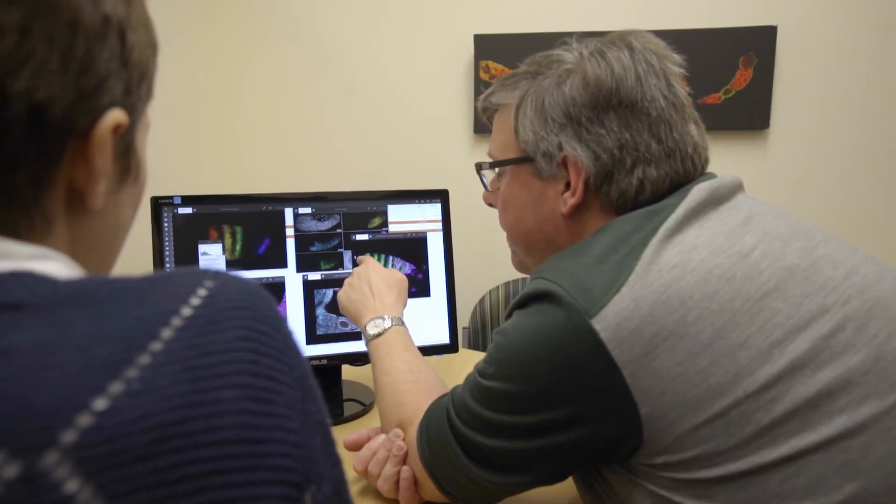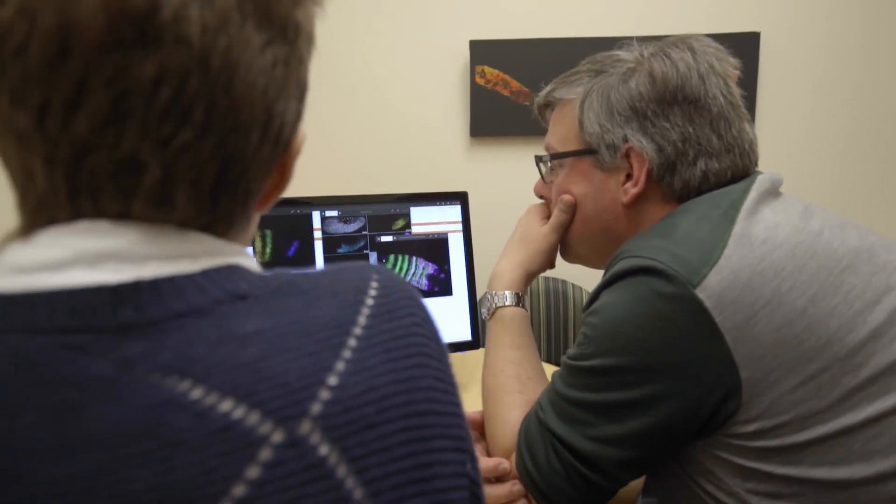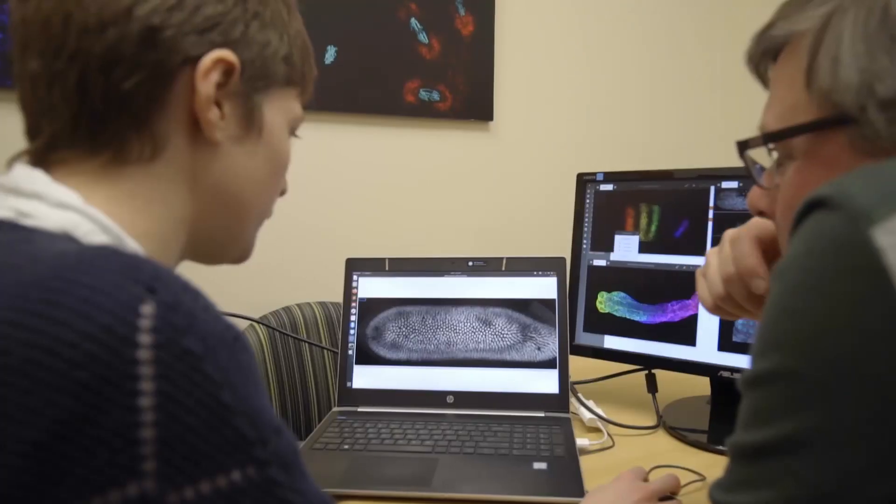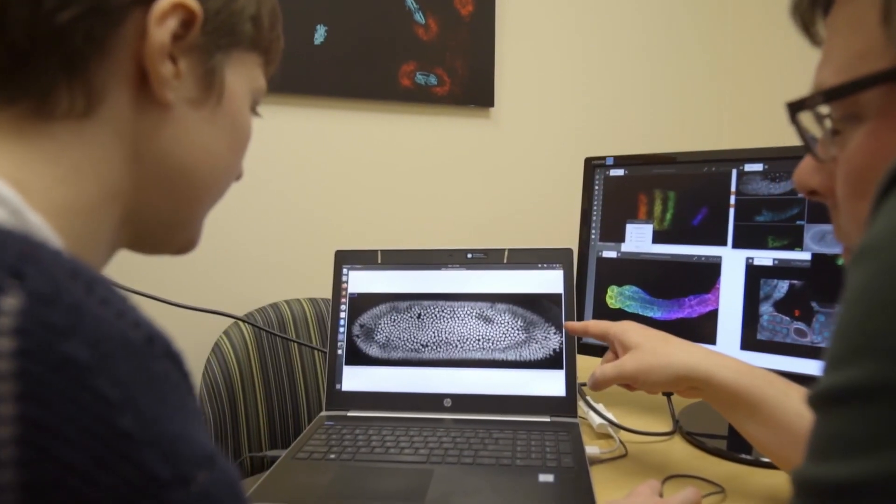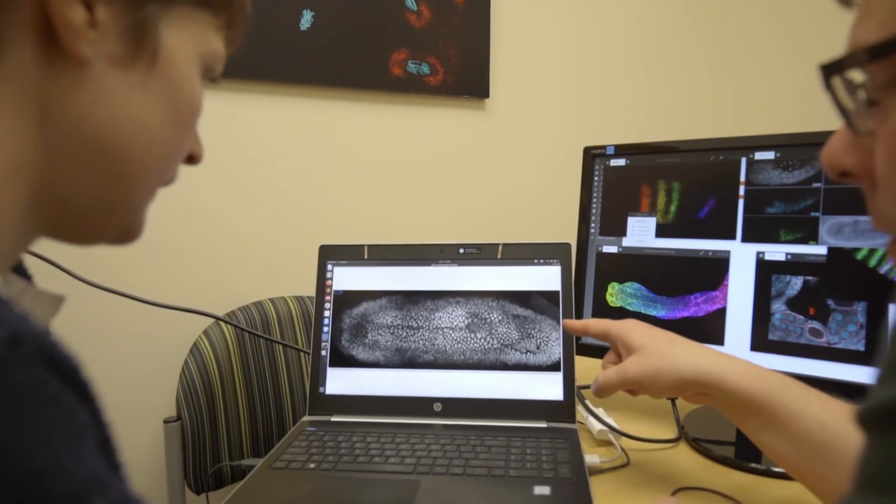Over evolutionary time, those processes have to change to give us different forms of animals. And so I'm really interested in how that works and how the genes and the proteins and the cells are reorganized to produce different sorts of animals.